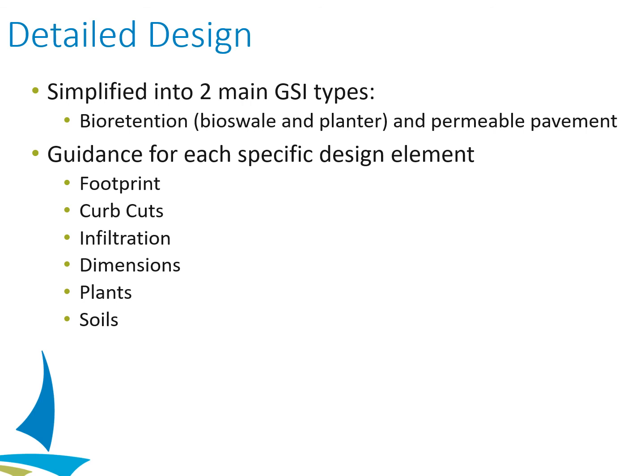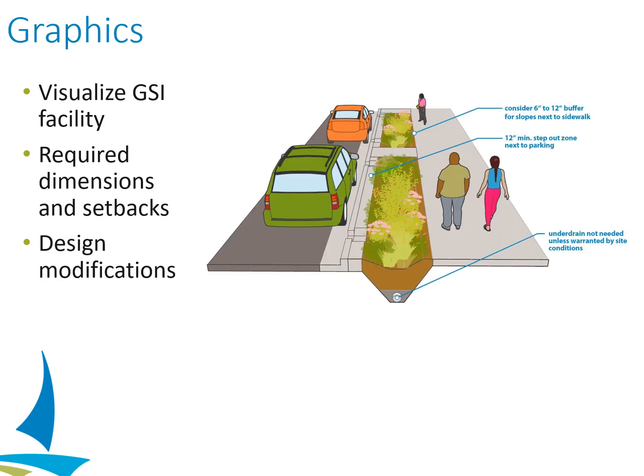For each of those GSI types, we've provided guidance for each specific design element within the GSI: the footprints of the GSI, recommendations around curb cuts, infiltration rates, plant selection, and soils and soil amendments. Each also has a graphic to help planners visualize GSI within their projects — what space it takes up, what the required setbacks look like in their project space — and demonstrates any design modifications like an under drain or amended soils. In this example, we see the vegetated side-sloped bioretention.